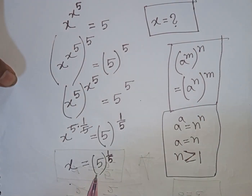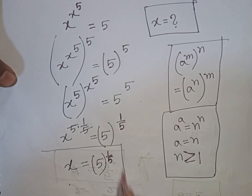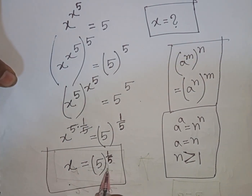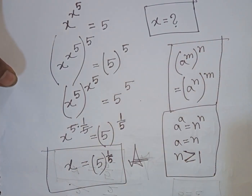So 5 to the power of 1/5 is the value of x. This is our final answer.